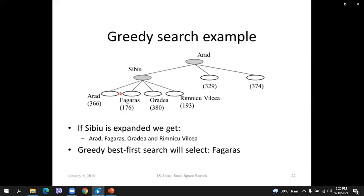Now we look at the map to find which places we can go from Sibiu: Arad, Fagaras, Oradea, and Rimnicu Vilcea. We look at all the states in our list and Fagaras has the shortest straight-line distance to Bucharest. In a greedy way, we choose this one to pursue. We keep the order in our list but only take the best one to start with, and the only thing that influences the choice is the heuristic itself.